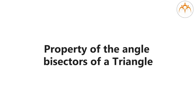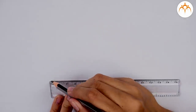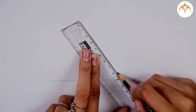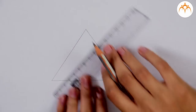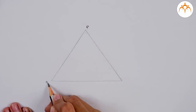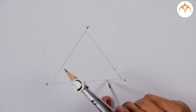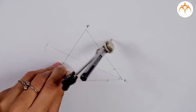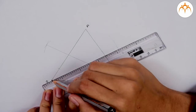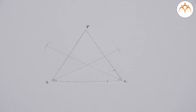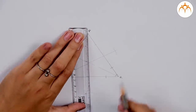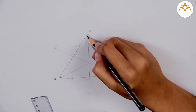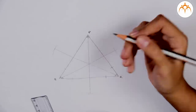Property of the angle bisectors of a triangle: let us draw a random triangle, say triangle PQR. Draw the bisectors of all its angles using a straight edge and compass. All three angle bisectors pass through a single point — that is, they are concurrent.